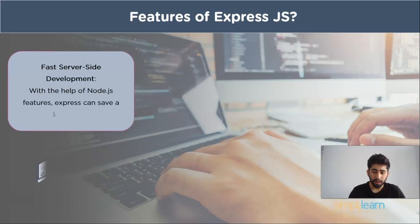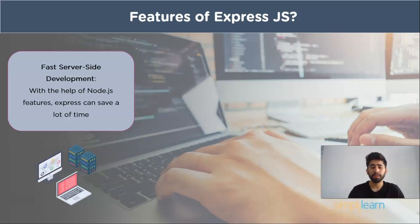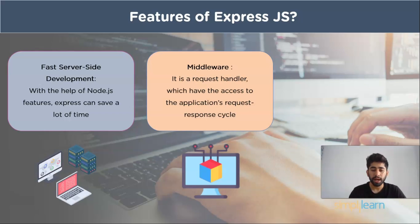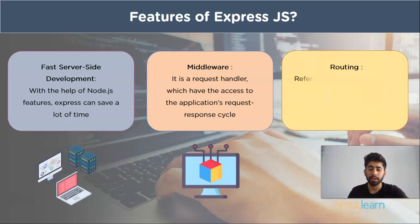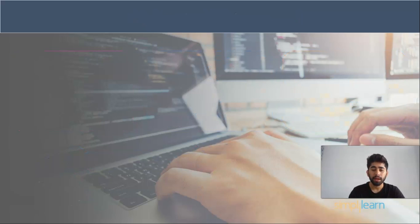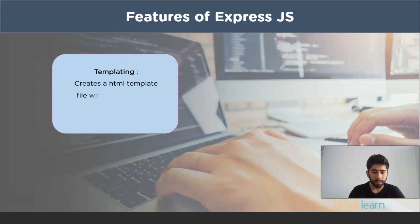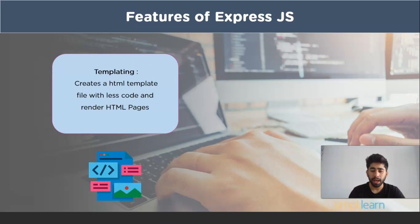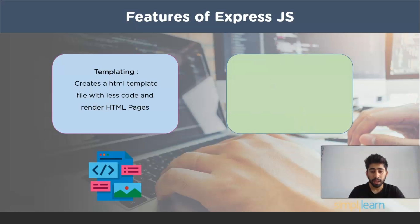First: fast server-side development. With the features of Node.js, Express saves a lot of time. Second: Middleware. Middleware is a request handler that has access to the application request-response cycle. Third: Routing. This refers to how an application's endpoint URLs respond to client requests. Fourth: Templating. It provides templating engines to build dynamic content on web pages by creating HTML templates on the server. Fifth: Debugging. Express makes it easier as it identifies the exact part where the bugs are.